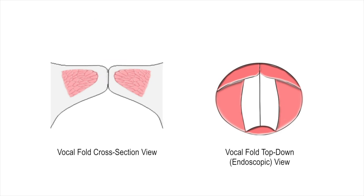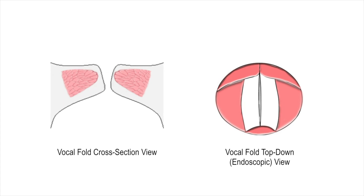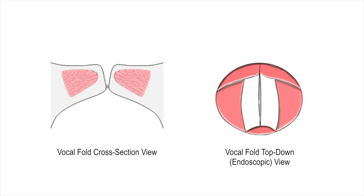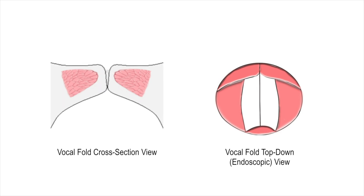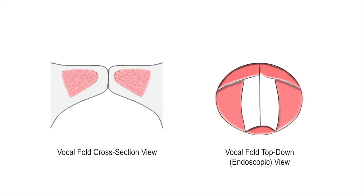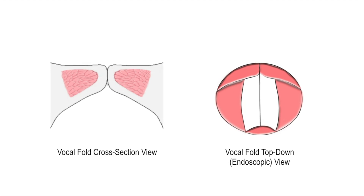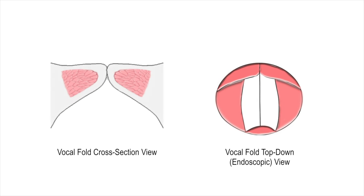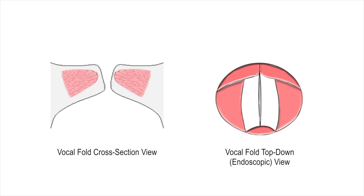Each air puff released during one complete vibration cycle is one cycle of the sound wave that we recognize as voice. The vocal fold membrane, or cover, moves freely and separately from the vocal fold muscle as a result of the action of the air flowing through the glottis. This movement is wave-like, like a ripple over the surface of a pond, and it is known as the mucosal wave.